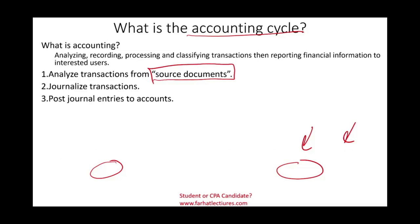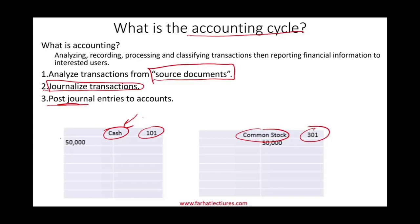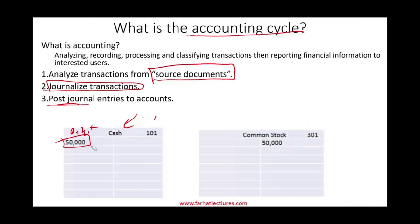Next, we post journal entries to accounts. We journalized the transaction, and now we need to post each entry to its appropriate account. In the prior entry, we debited cash and credited common stock. We go to cash account 101 and common stock account 301, and update them accordingly — cash increases in the debit column, common stock increases in the credit column. This is the posting process.